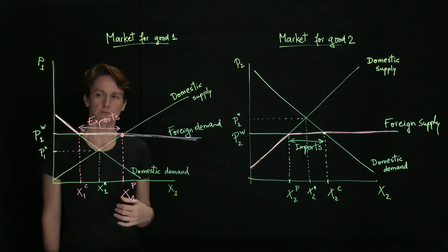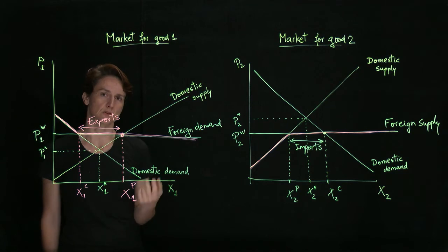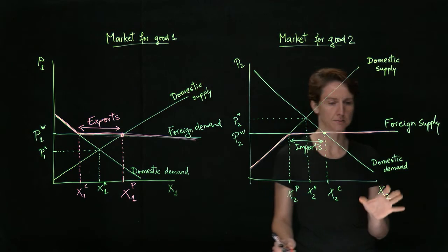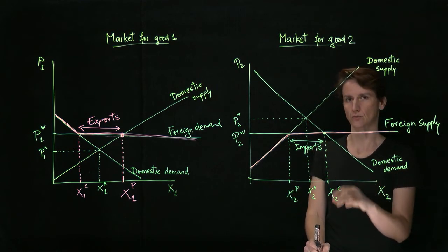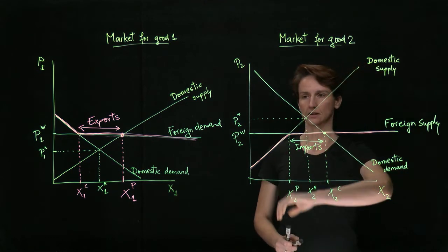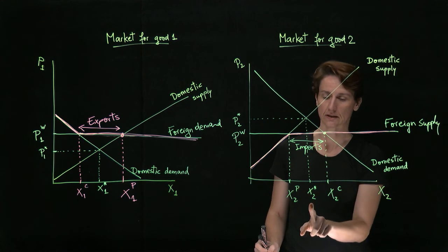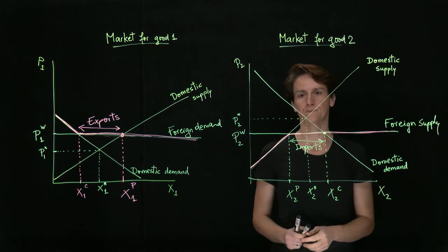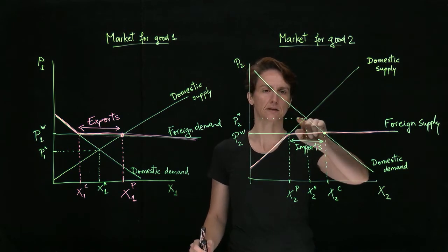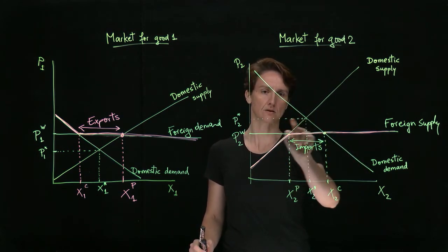So it's worth now stepping back to examine how consumers and producers in both scenarios are affected. First, let's look at the market in which this country will be an importer. Initially, without trade, the equilibrium price was P2 star, and the quantity produced and consumed was X2 star. That meant that consumers, so domestic buyers, had total surplus, as described by this triangle.